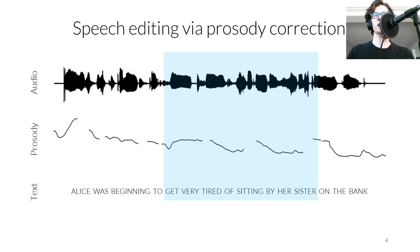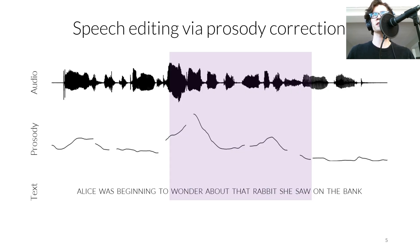So first we try to naively copy and paste a phrase from a different sentence, and let's listen to that again. Alice was beginning to wonder about that rabbit she saw on the bank. And we hear this sounds unnatural. This is because the new speech is both much higher in pitch and much faster. In other words, there are discontinuities in the prosody. We call these discontinuities prosody boundary artifacts.